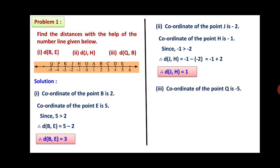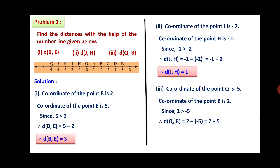Third: from the figure, the coordinate of point Q is minus 5 and the coordinate of point U is 2. Since 2 is greater than minus 5, distance between Q and U equals 2 minus (minus 5), which equals 2 plus 5. Therefore, distance between Q and U is equal to 7.